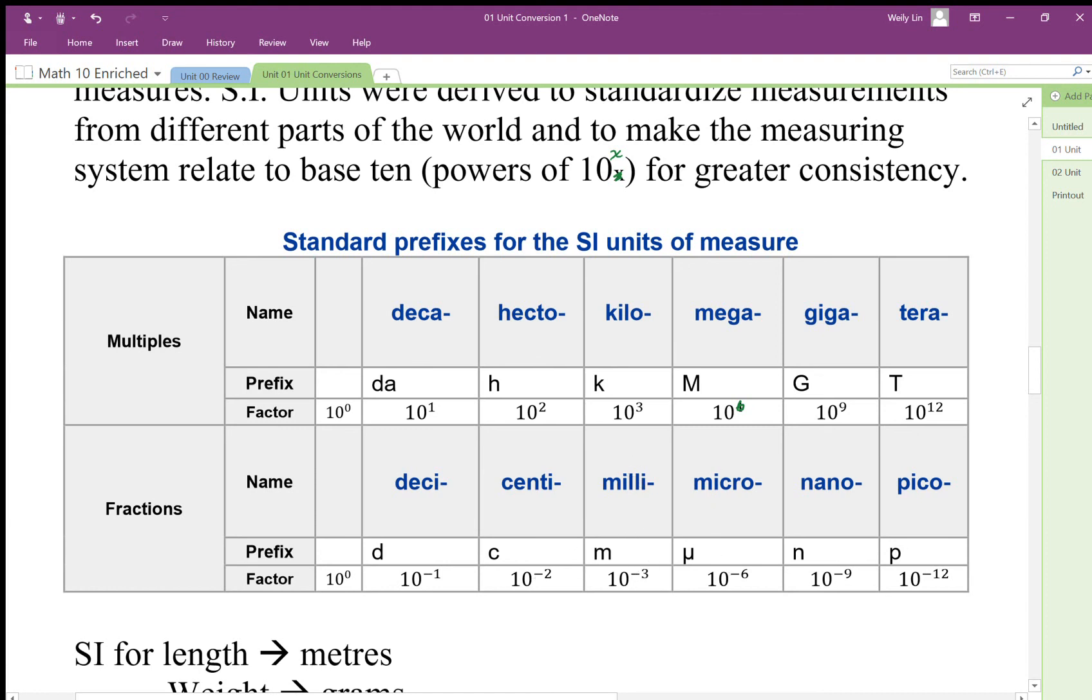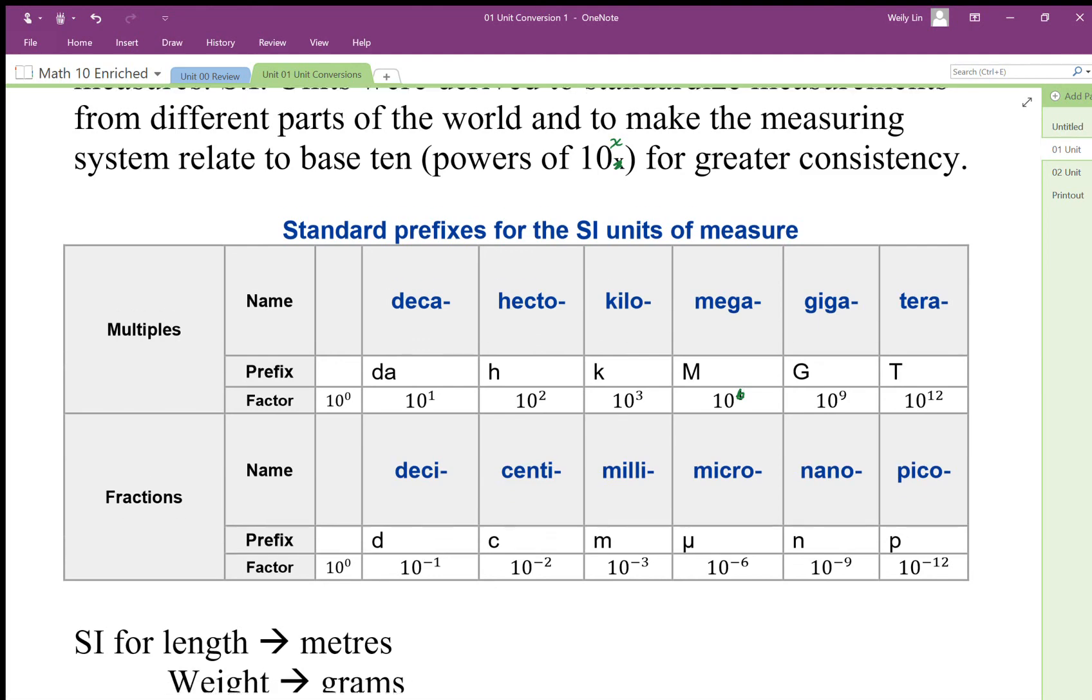Micro is one millionth. Nano is one billionth, and pico is one quadrillionth. These are our prefixes for these measurements.